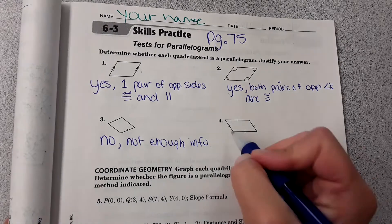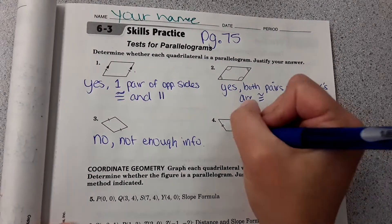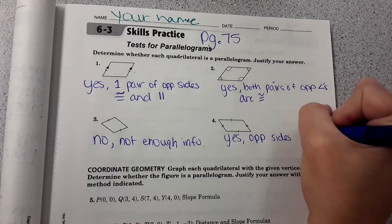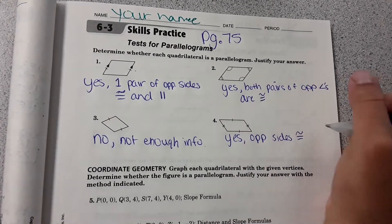And number four shows opposite sides congruent. So yes, that is a parallelogram. Opposite sides congruent, and both pairs, of course.